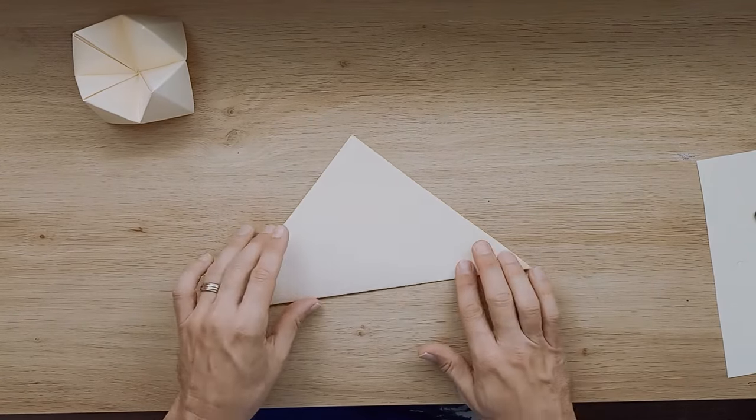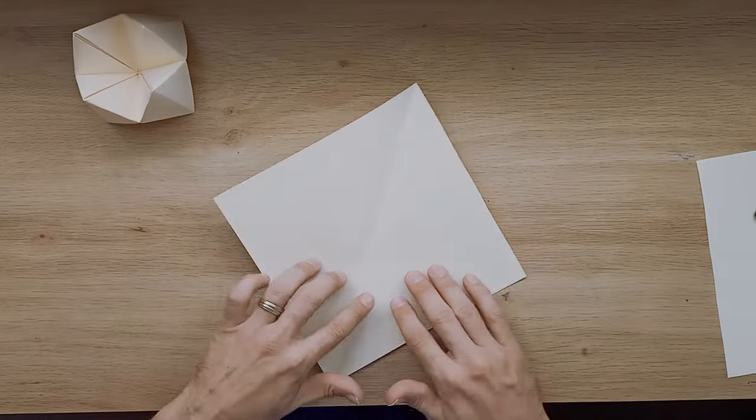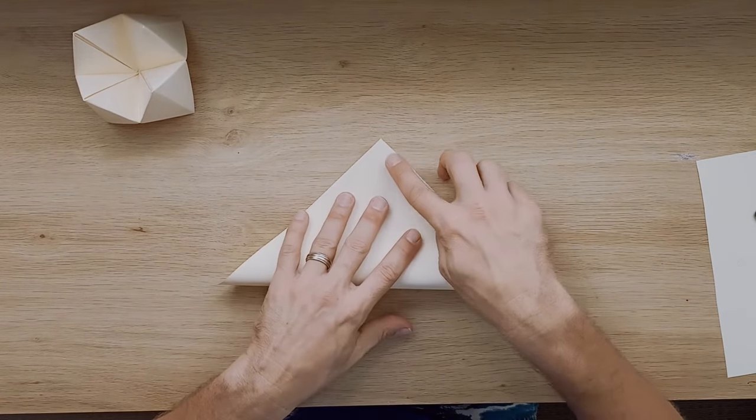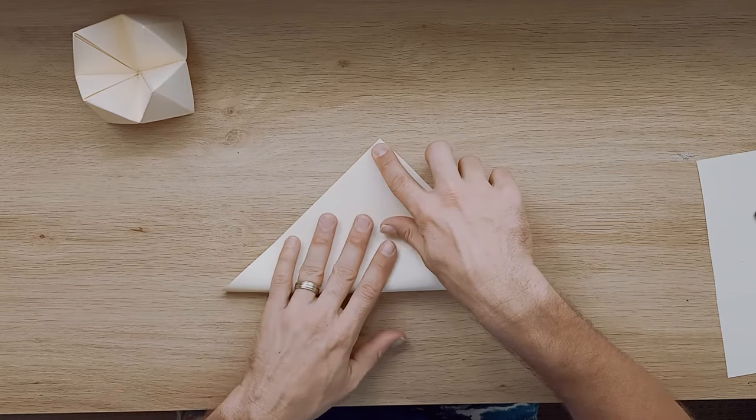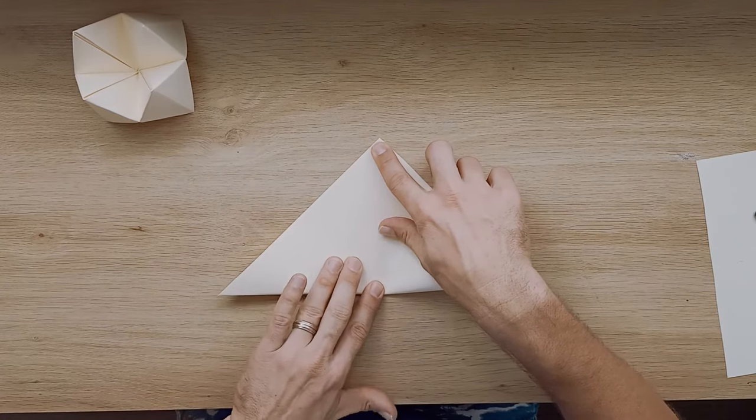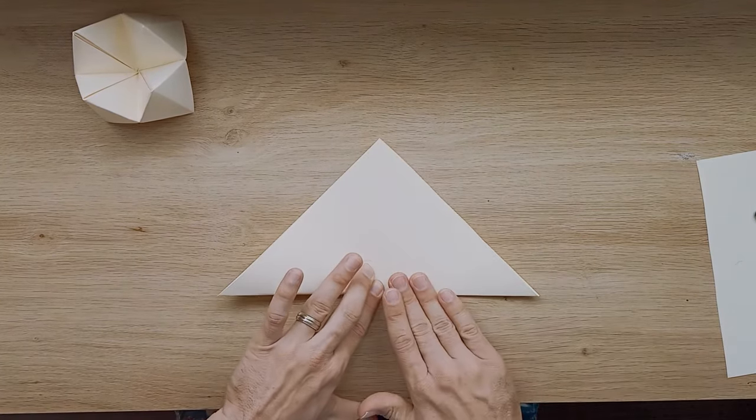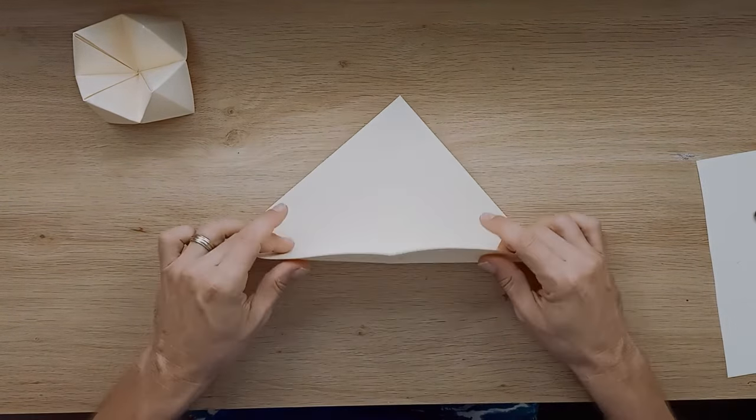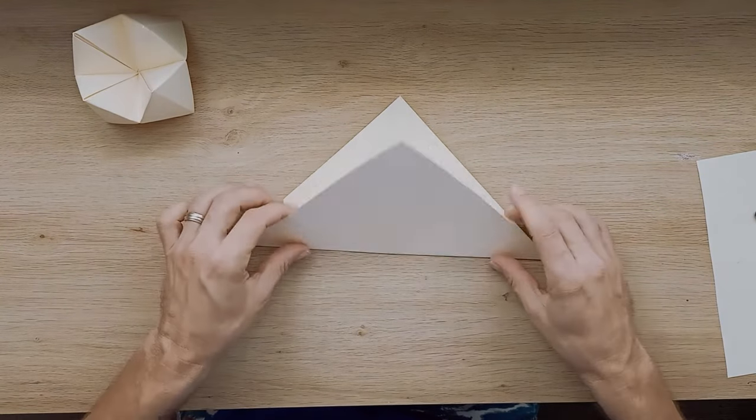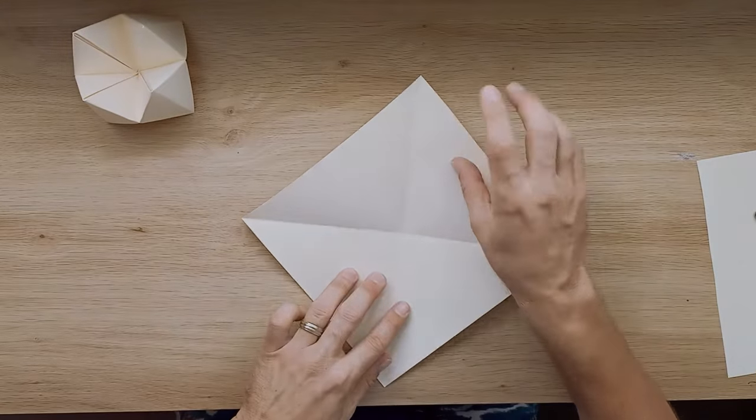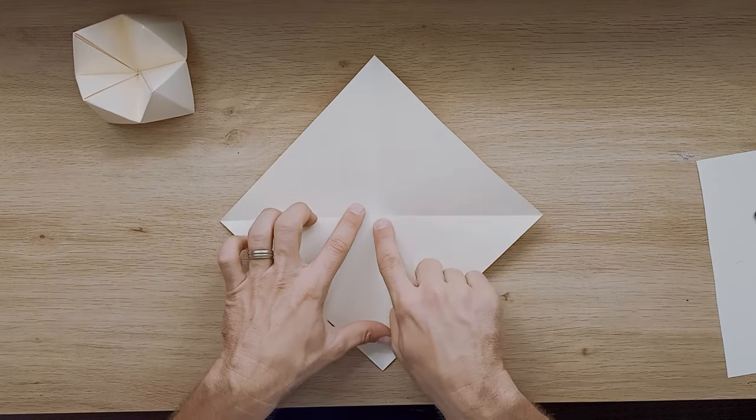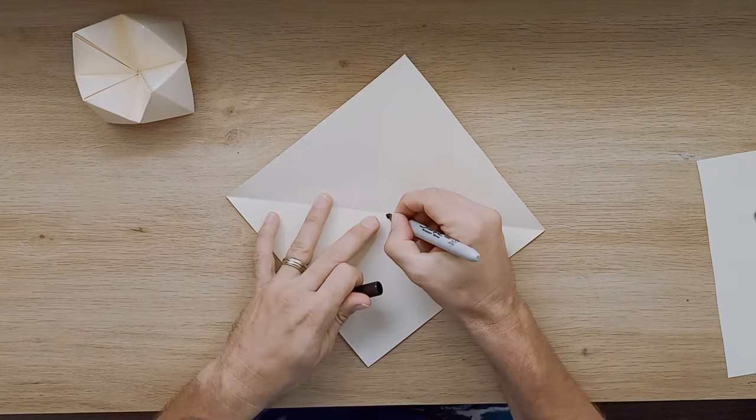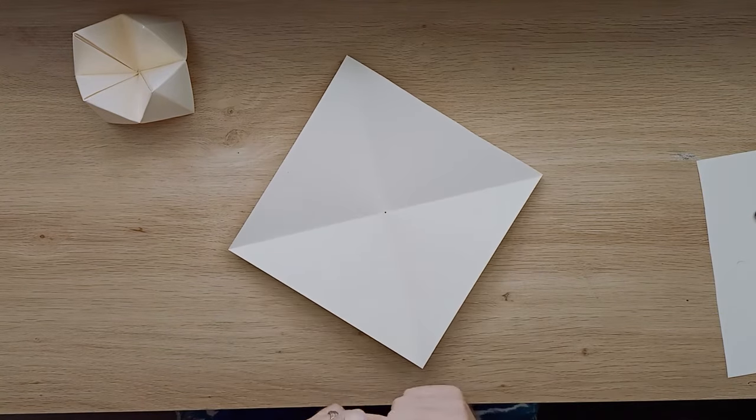The next thing I want to do is open it up and make another diagonal fold going the other way. So we take it up to the very top, make sure our corners and our little points are all meeting up and make a fold along there. Open it up again and you can see I've got one fold going this way and one fold going that way. That's really important because now I have a little center point right in the middle. I'll put a little dot there so you can see the center point.